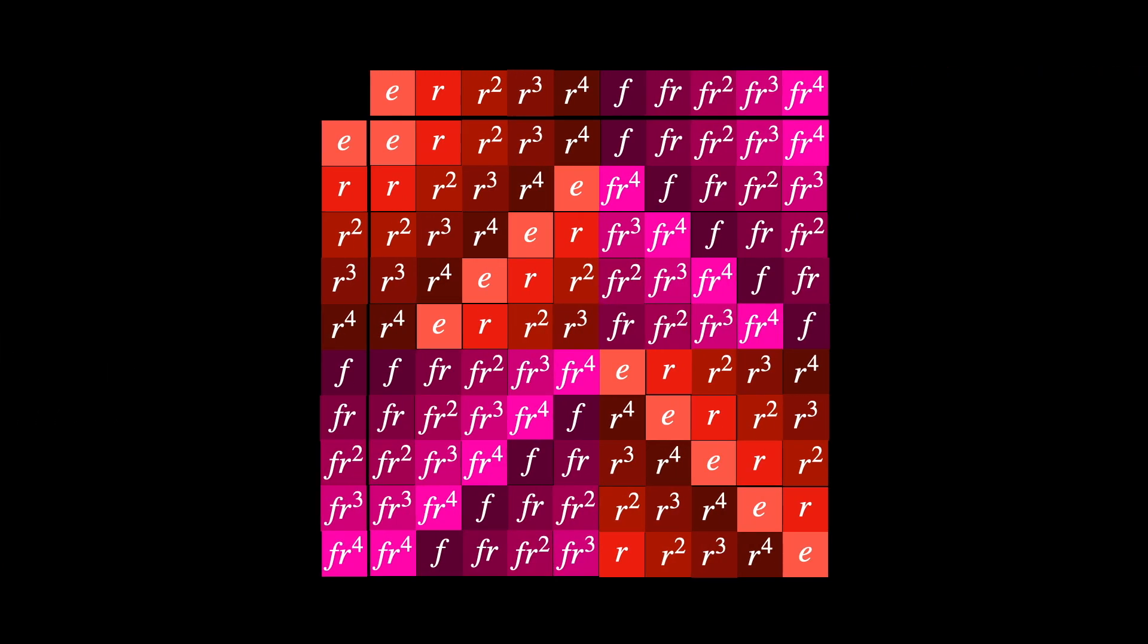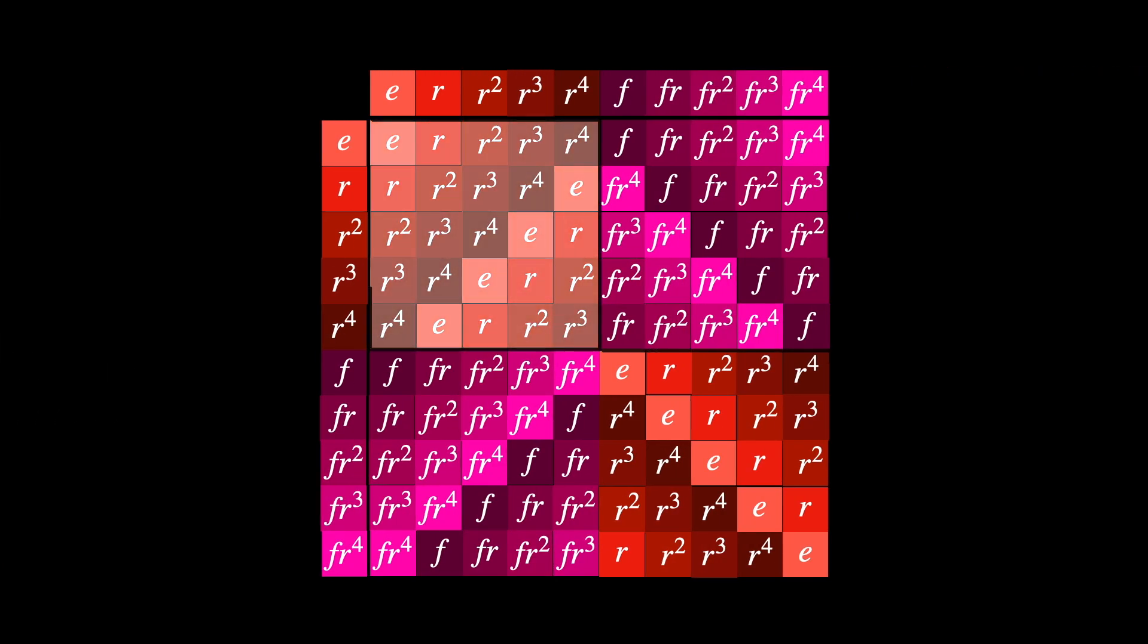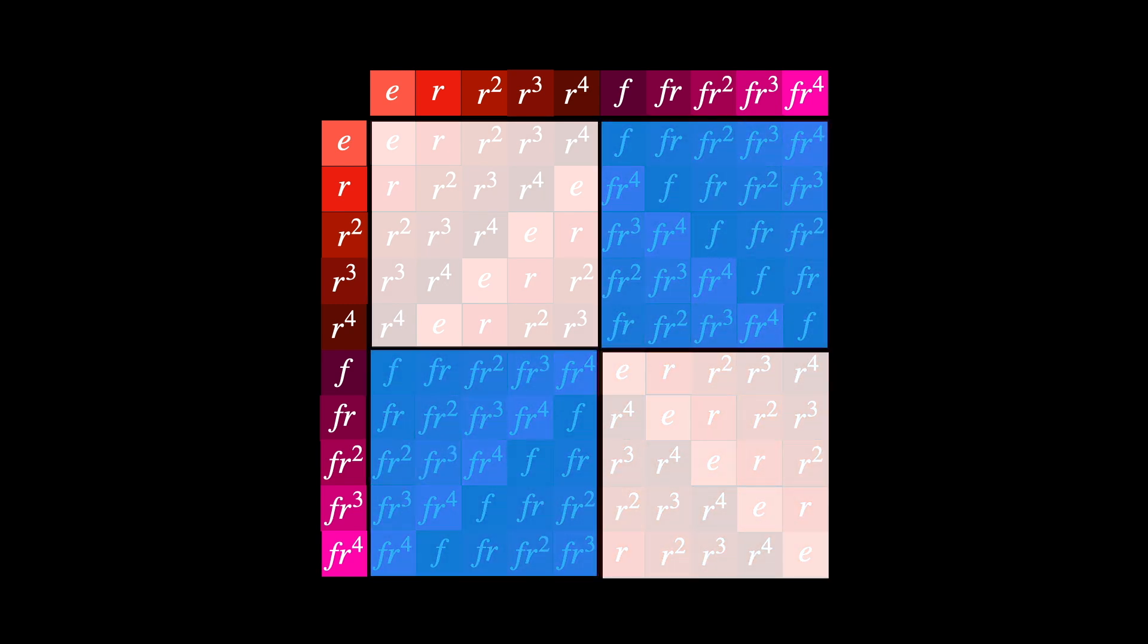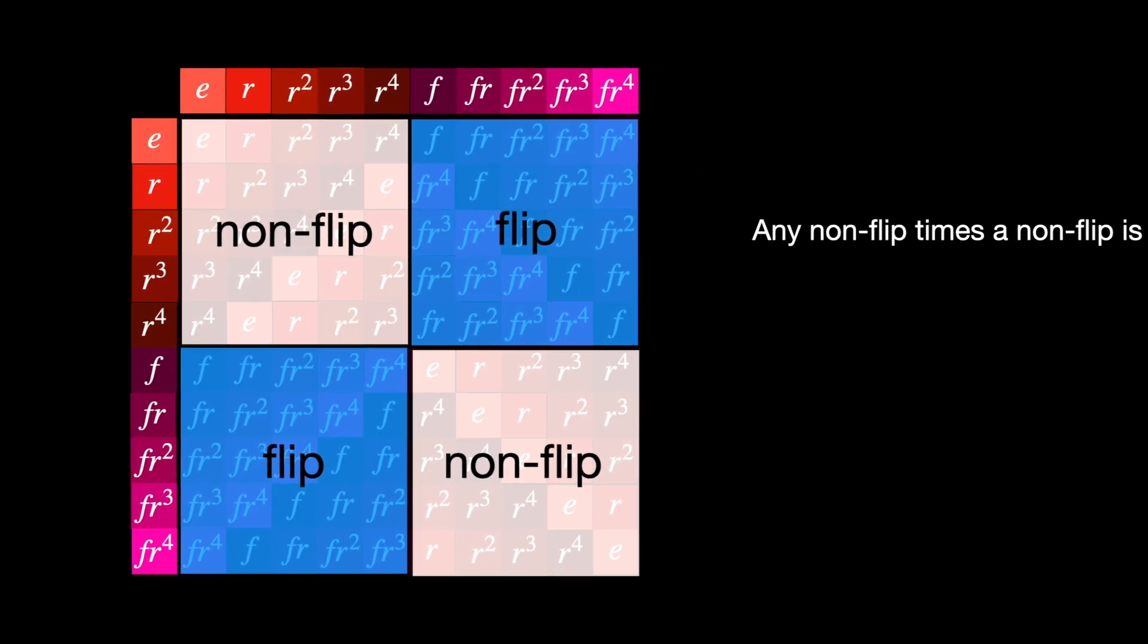The multiplication table shows that quite clearly, where we can divide it into four very distinct quadrants in this example of D5. We can call them flip and non-flip. We see this relationship play out.